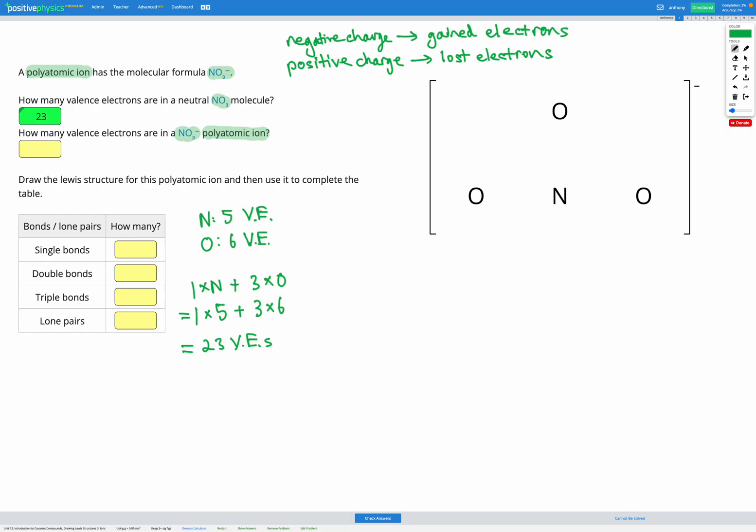So here, since we have a negative charge of 1, that means we've gained 1 electron. So we had 23, we gained 1 electron for a total of 24 electrons. So let's check that here.